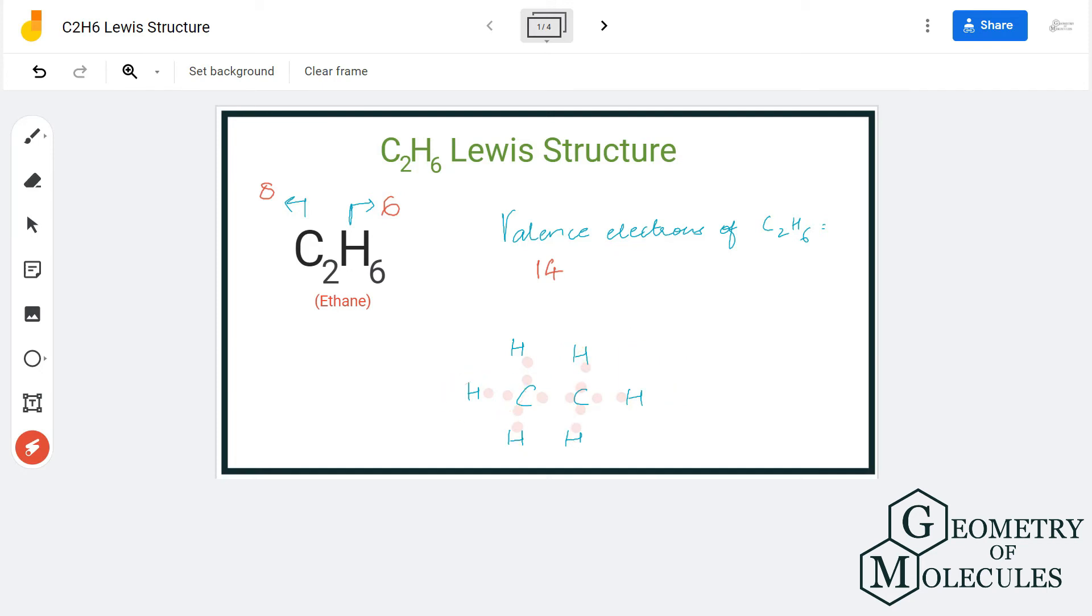Here, every hydrogen atom has two valence electrons in its outer shell, which means it has a stable structure. Your carbon atom has eight valence electrons, which means it has a complete octet. So this is the Lewis structure for C2H6.